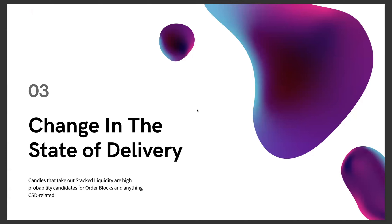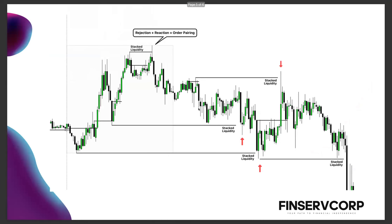Change in state of delivery: the candles that take out stacked liquidity are high-probability candidates for order blocks and anything CSD-related. This can also be fair value gaps, liquidity voids, BCCB, GP — anything you name it. These are your high-probability candles that will be used to move price. And right here, you can see it — that's exactly what was created. That's one example, and this candle here caused that liquidity.